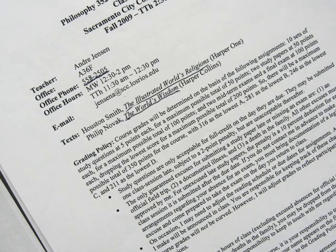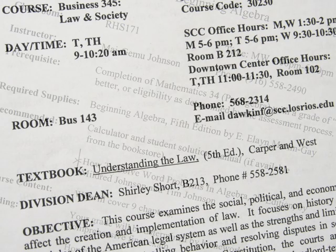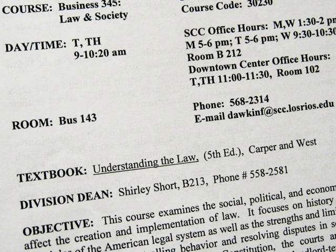Your course syllabus is the best guide to finding out what book is assigned. Your professor should have handed out a syllabus in class or posted one online. The syllabus will list any required texts for the class.